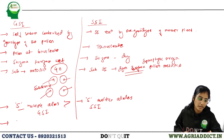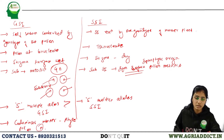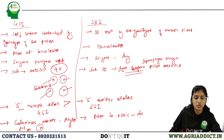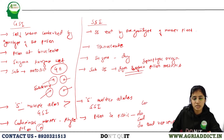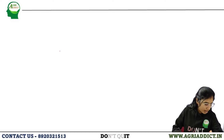In gametophytic SI, the alleles act individually in pollen since it is haploid — there is no question of dominance or codominance. In the style, alleles behave in a codominant manner. In sporophytic SI, pollen and pistil alleles can act dominant, codominant, or in mixed fashion, but majorly it is codominance in female and dominance in male.